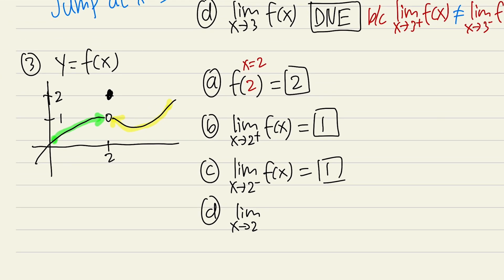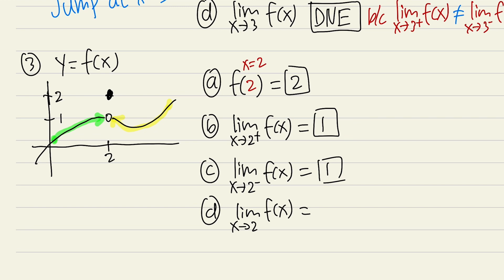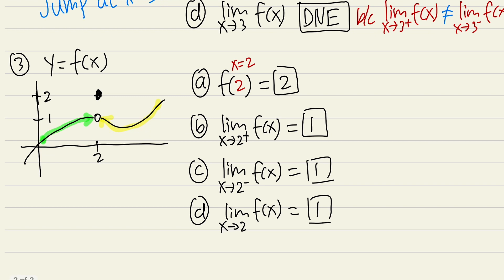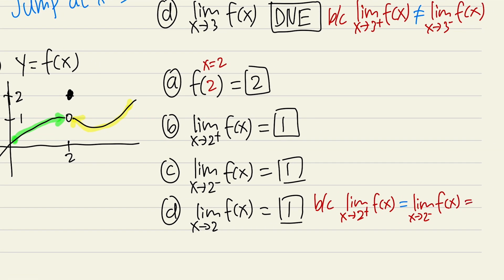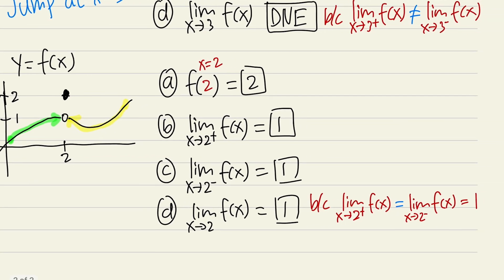For part d, the limit as x approaches 2 with no plus or minus: this time we finally have a good answer. Both the right-hand limit and left-hand limit equal 1 — they are the same. Because the limit from the right equals the limit from the left, both equal to 1, the two-sided limit equals 1.